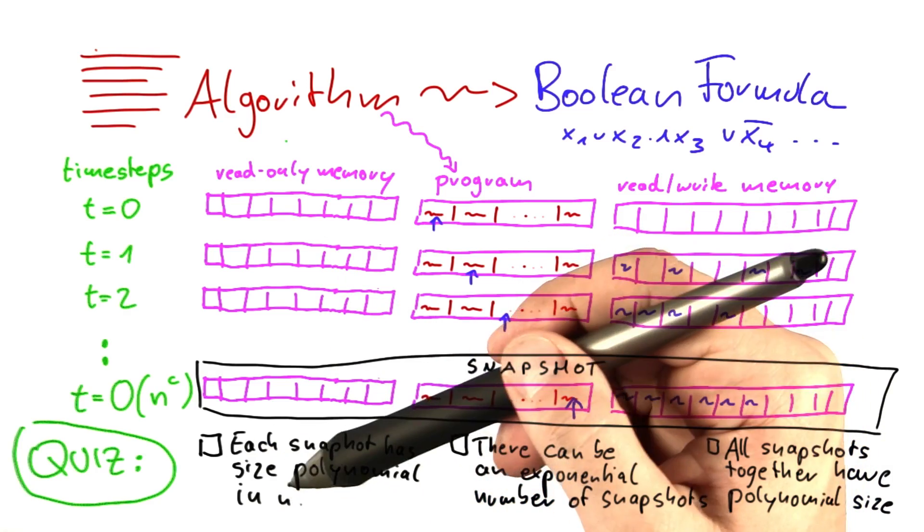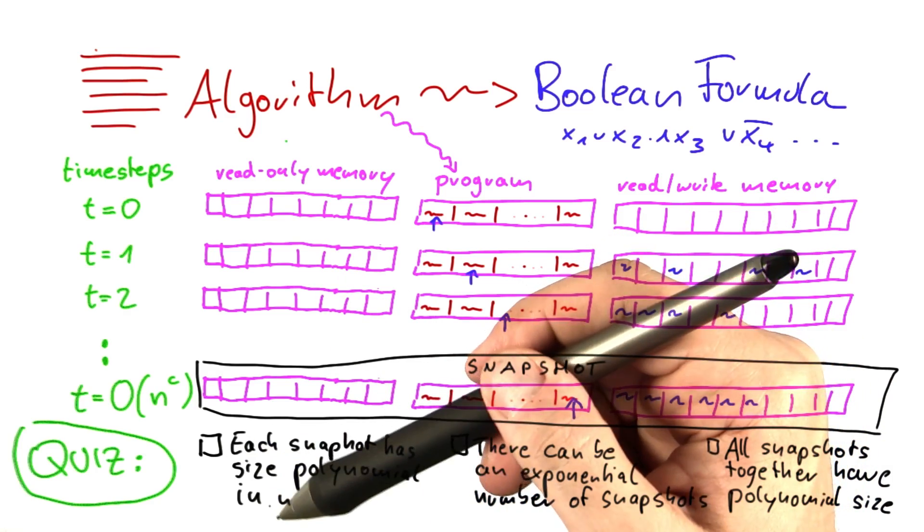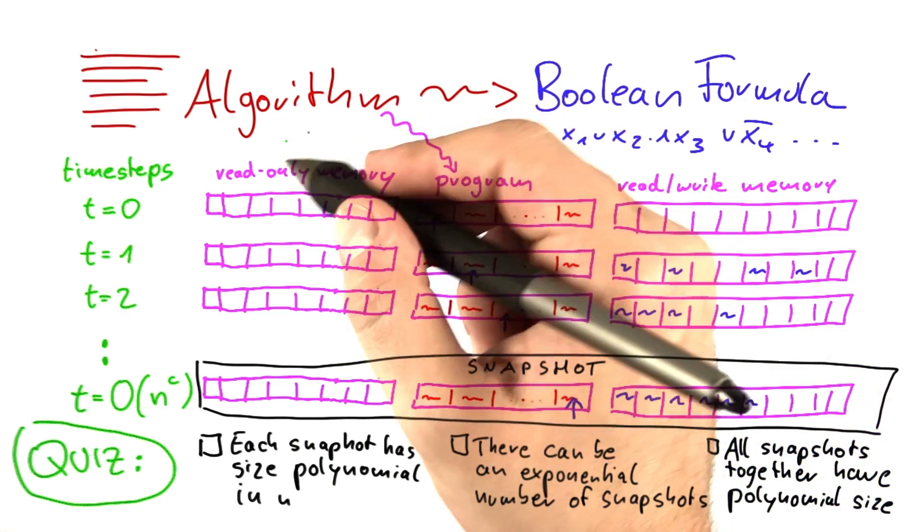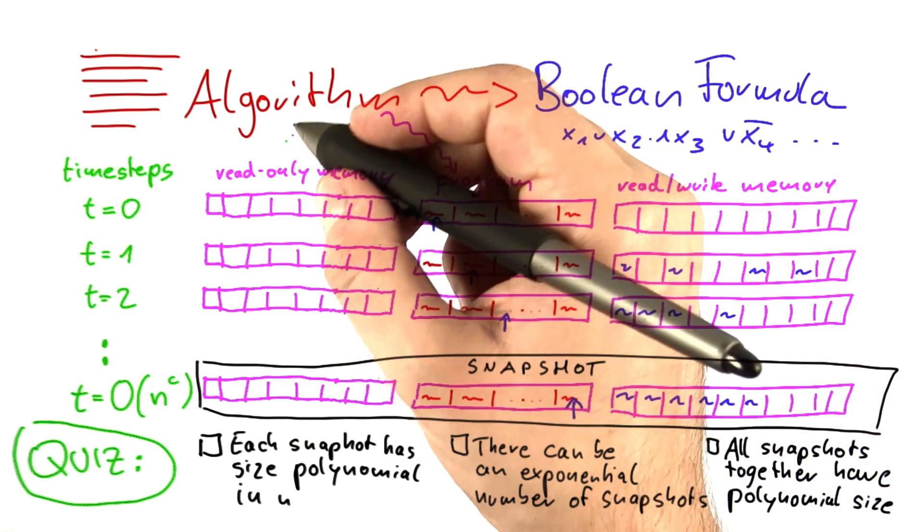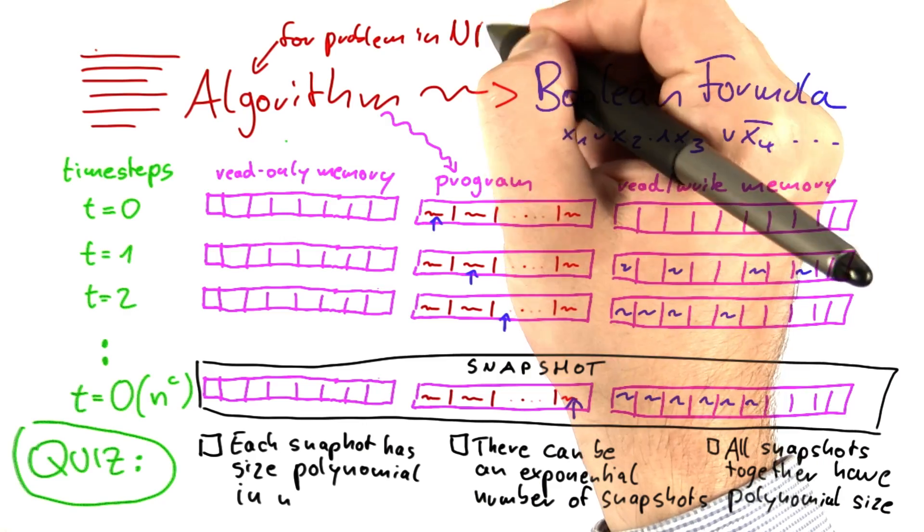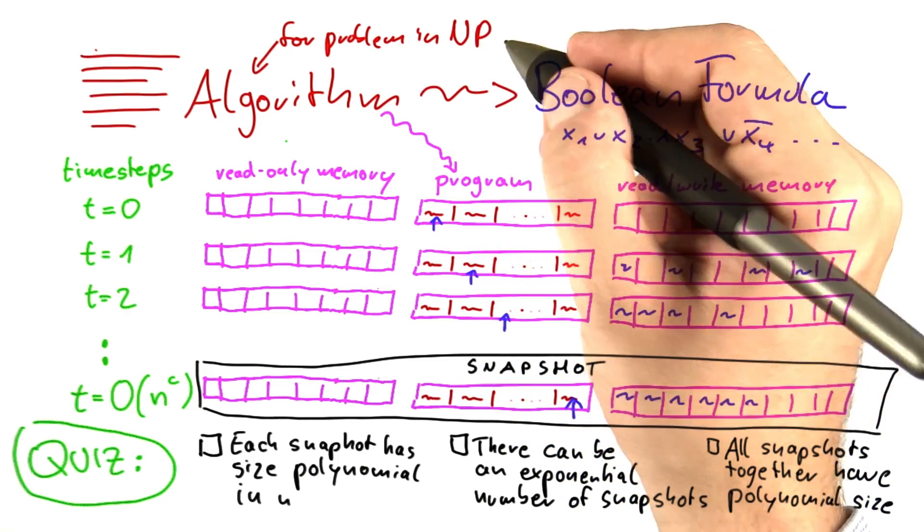And by polynomial size, I again mean that it's some polynomial of the input size n that we're always using. And you should keep in mind that the algorithm that we're looking at is an algorithm for a problem in NP and it runs on a non-deterministic RAM.